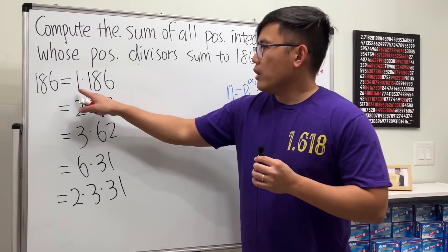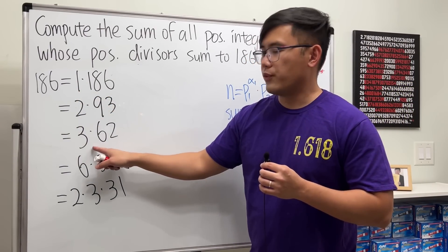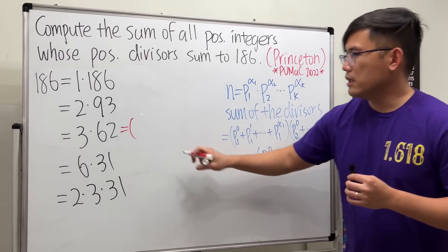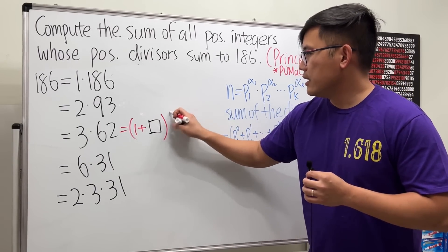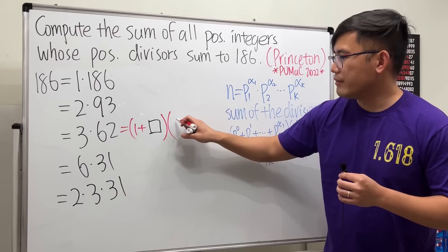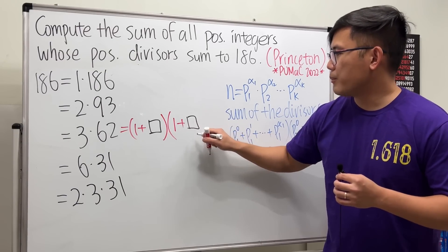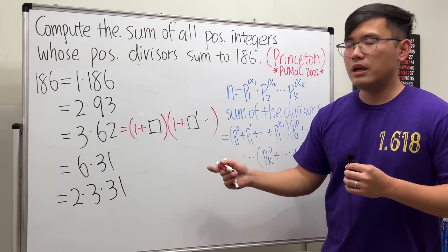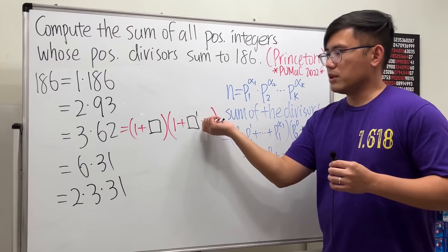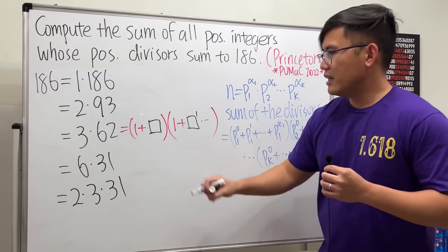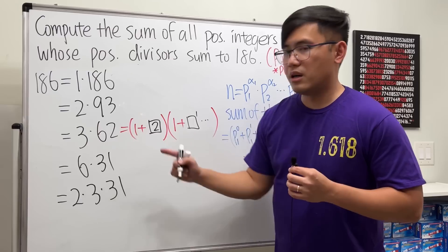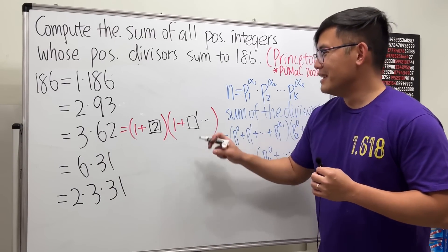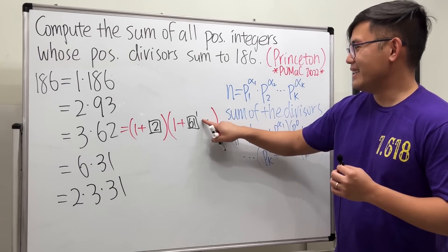For the factoring 3 × 62: the factor 3 looks like 1 + a prime, so I need a prime p where 1 + p = 3, giving p = 2. For 62, I need 1 + p = 62, so p = 61, which is indeed prime. So this works: n = 2¹ × 61¹ = 122. This case is achievable.